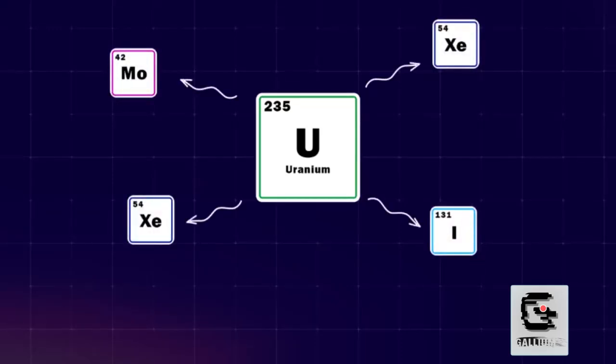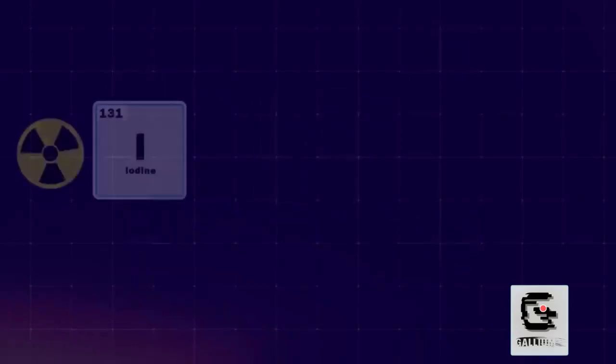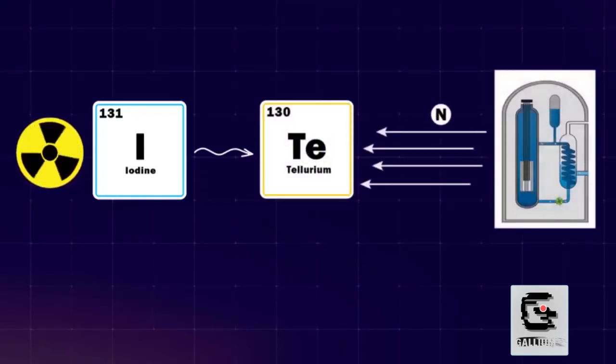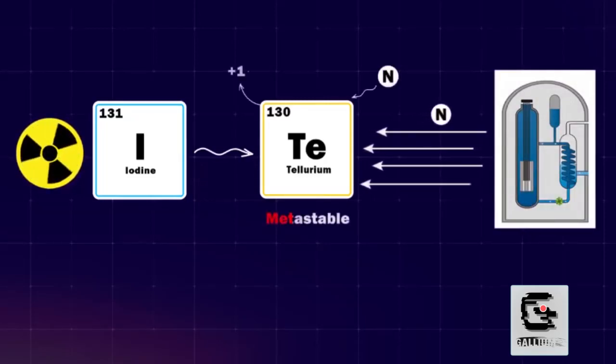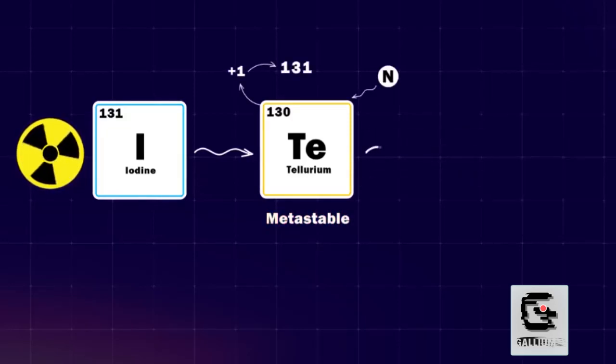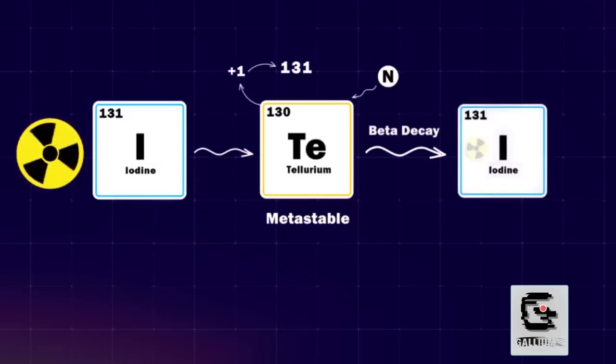Another method of producing active iodine is using tellurium oxide. Tellurium-130 that is within tellurium oxide powder is also bombarded with neutrons until it absorbs a neutron and turns into the meta-stable tellurium-131 which has one extra neutron. Meta-stable elements will decay and after a beta decay and some changes in the nature of the nucleus of the element, tellurium-131 turns into iodine-131 in gaseous form trapped in between tellurium crystals.